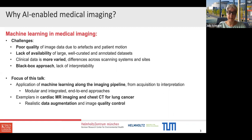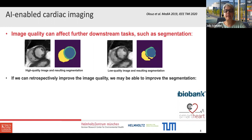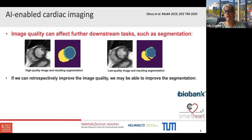Image quality can really affect further downstream tasks, for example cardiac segmentation. On the left you see a high quality cardiac short axis view with a nice segmentation — the blood pool in blue, myocardium in green, left ventricle in yellow. However, if there's a low quality instance of this image and we run a vanilla U-Net segmentation approach, the resulting segmentation won't be satisfactory — we get segmentation failure.